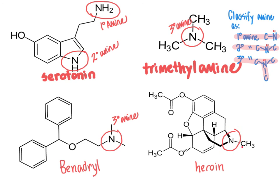In heroin, the nitrogen has three direct bonds to carbon — one to a methyl group and two to carbon atoms of the ring — making it a tertiary amine as well. Whether an amine is primary, secondary, or tertiary has implications for the types of reactions the molecule will undergo. In upcoming videos, we will transition from classifying amines to determining the systematic IUPAC names for particular amine structures.